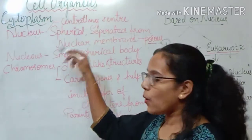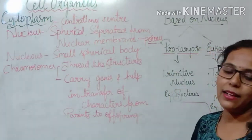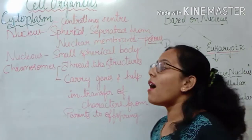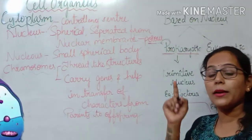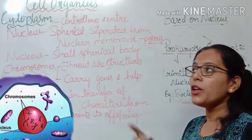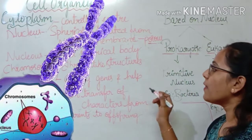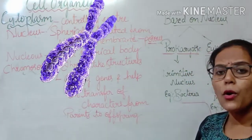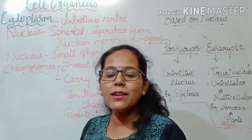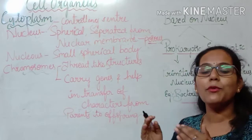Inside the nucleus there is the nucleolus — a small spherical body present inside the nucleus. The nucleolus is surrounded by chromosomes. Chromosomes are the genetic material. If you look at the structure, chromosomes are thread-like structures found inside the nucleolus. These chromosomes carry genes from parents to offspring.